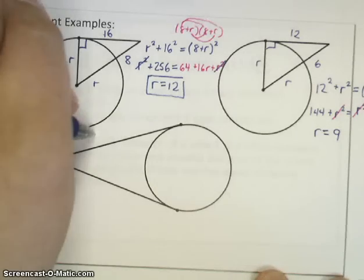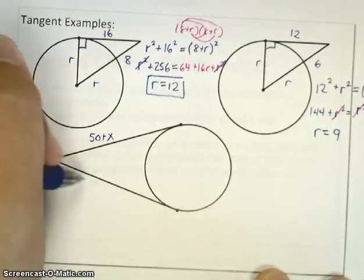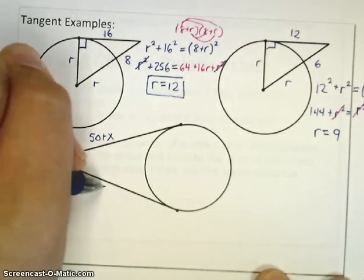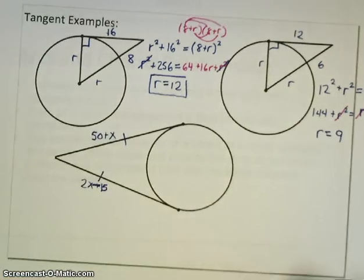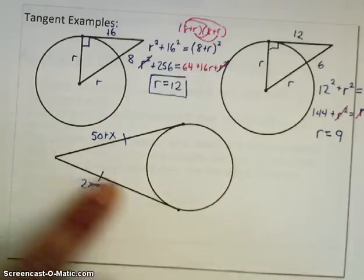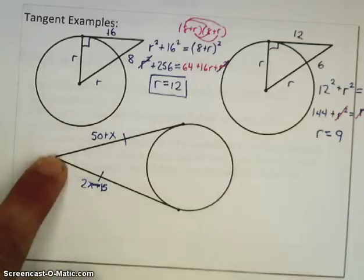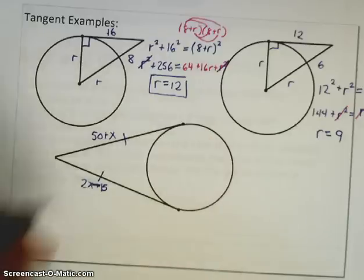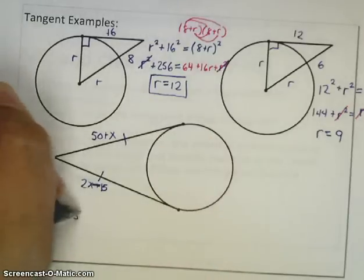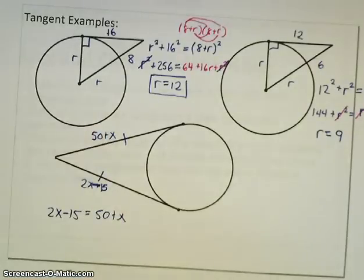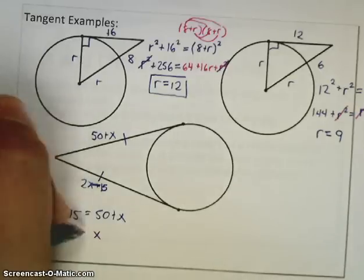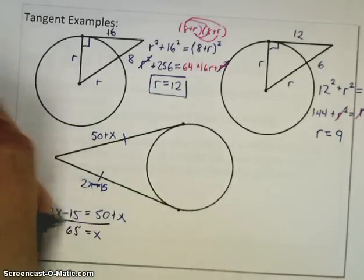In the last property here, I have 50 plus x and 2x plus 15 as my side length, I'm sorry, 2x minus 15, and according to our third theorem with tangents, tangent lines that intersect will have a common distance. Therefore, 2x minus 15 will be equal to 50 plus x. Upon solving this, subtract x, add 15 over, divide by nothing because it's going to be a 1, x is going to equal 65.